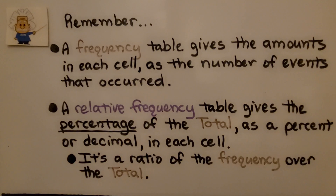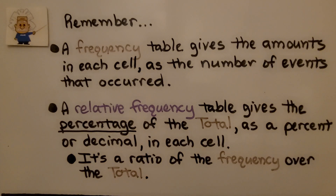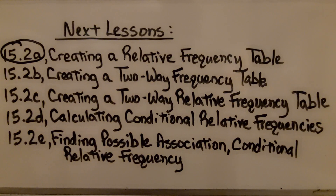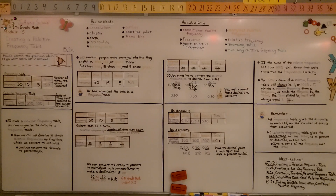Remember, a frequency table gives the amounts in each cell as the number of events that occurred. A relative frequency table gives the percentage of the total as a percent or decimal in each cell — it's a ratio of the frequency over the total. We've finished this first part of the lesson and we're moving on to 15.2b, creating a two-way frequency table. Keep doing your best and keep improving yourself every single day. Please join me for the next lesson.